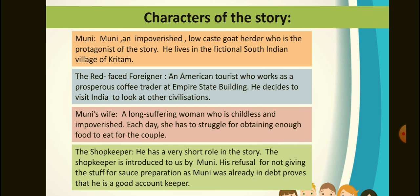Next is Muni's wife, a long-suffering woman who is childless and impoverished. Each day she has to struggle for obtaining enough food to eat for the couple. The last character is the shopkeeper, who has a very short role in the story. He is introduced to us through Muni. His refusal to give goods for sauce preparation — as Muni was already in debt — proves that he is a very good account keeper.